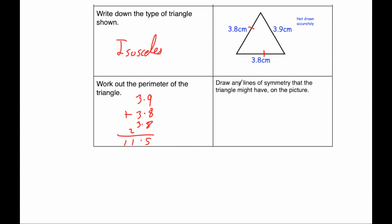And finally, the question says, draw any lines of symmetry this triangle might have on the picture. So it's an isosceles triangle, so it will have one line of symmetry. And the line of symmetry would look something like that.